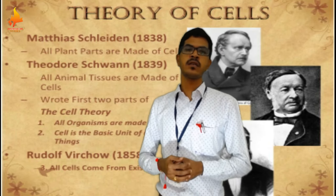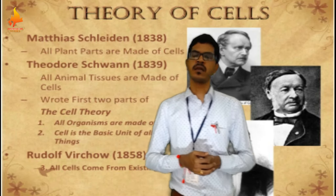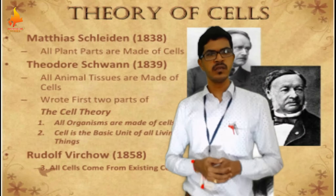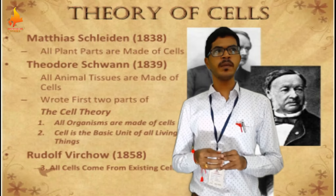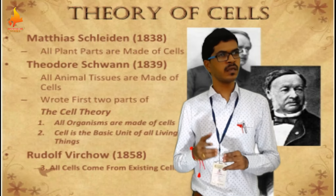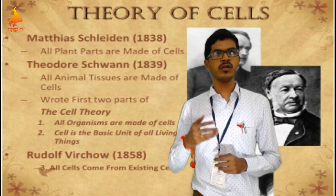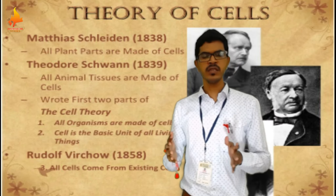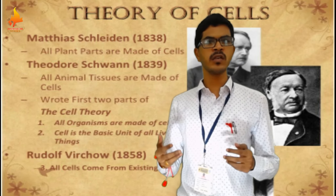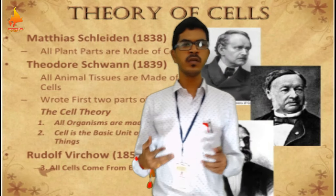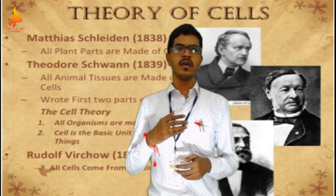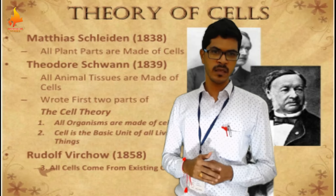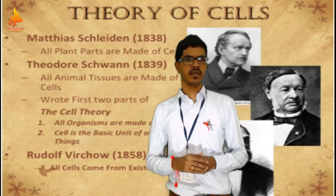Then come two great scientists: Matthias Gliedel and Theodore Squank. Matthias Gliedel is a botanist and Theodore Squank is a zoologist. Initially they worked separately, but later on they worked as a unit and propagated a cell theory. They introduced a cell theory with their findings.